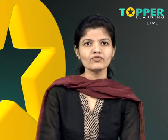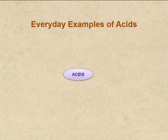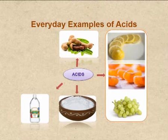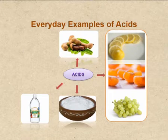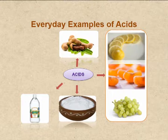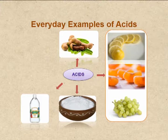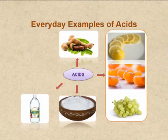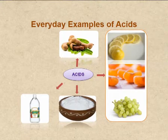Let us see where we come across acids in our daily lives. We generally take common ingredients such as lemon, tamarind, curd, or vinegar in our food. All of them have a common taste — a sour taste. It is because all these ingredients contain acids. Tamarind contains tartaric acid, lemon and other fruits from the citrus family such as oranges and grapes contain citric acid. Curd contains lactic acid. Vinegar, which is mainly used in pickling, contains a mild organic acid, i.e., acetic acid.